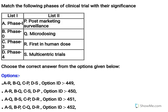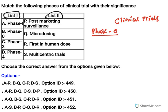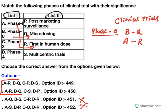Now again a similar matching question about clinical trials. Phase zero, which most students overlook, is related to micro-dosing, so B goes with Q. Applying the same technique, only two options have B with Q, so the remaining two are eliminated. Phase one starts with the first human clinical dose, so A goes with R.